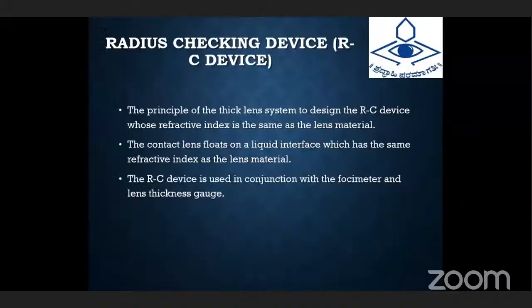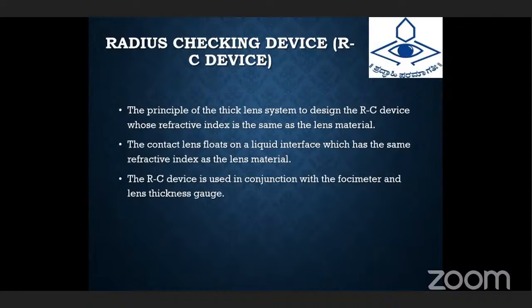Next, we have radius checking devices, or RC devices. These use the principle of a thick lens system to design RC devices whose refractive index is the same as the lens material. The contact lens liquid interface has the same refractive index as the lens material. It is a simple instrument. If the contact lens is stored in the liquid interface, both the refractive index of the liquid and the material should be matched. The RC device is used in conjunction with a focimeter and a lens thickness gauge.